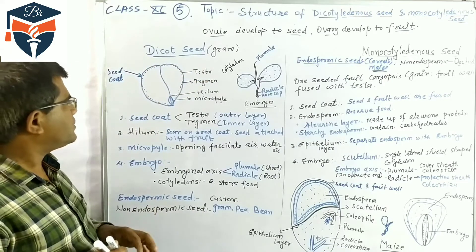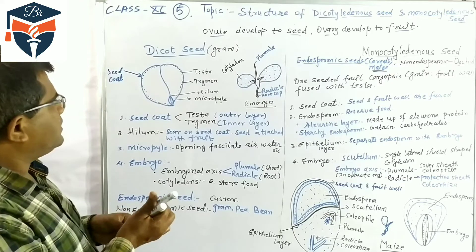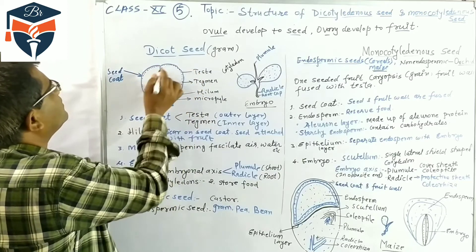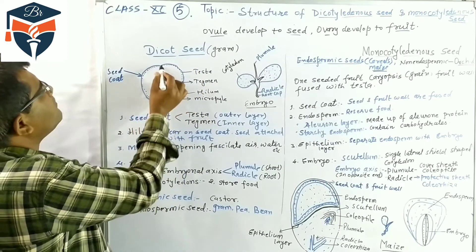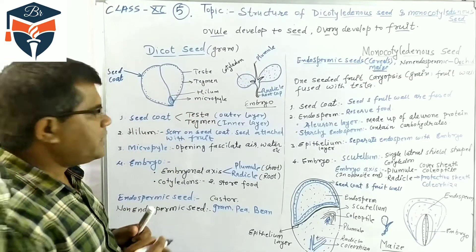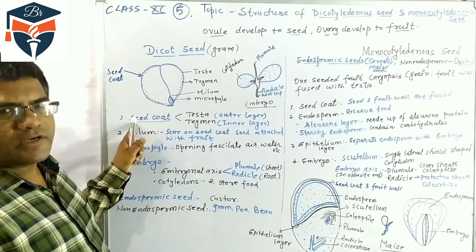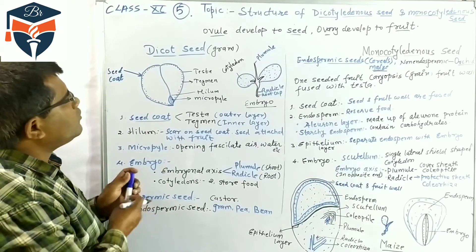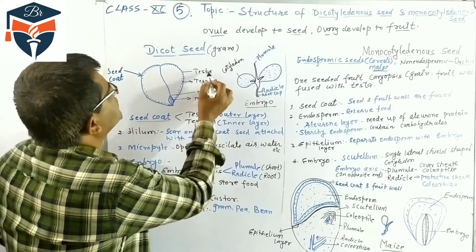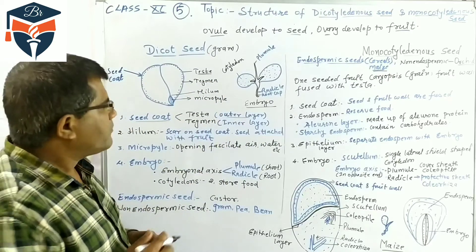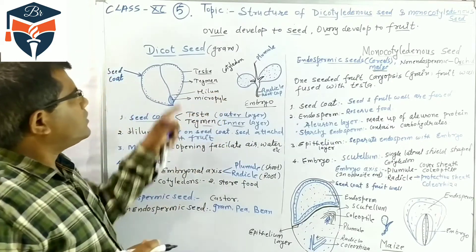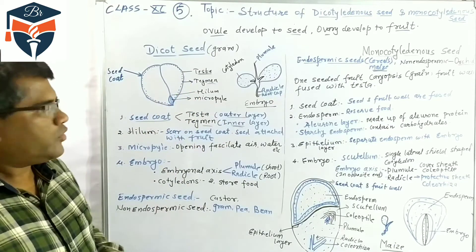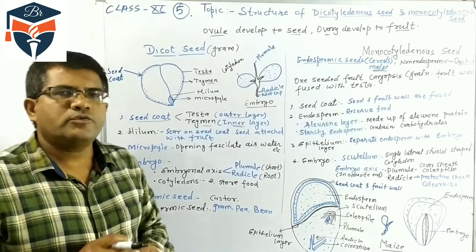Looking at the structure of the dicot seed, the first part is the outermost covering of the seed, called the seed coat. The seed coat is divided into two parts: the outer layer is called the testa and the inner layer is called the tegmen. Both layers provide protection to the seed.